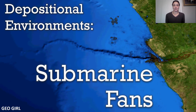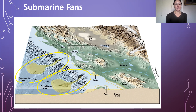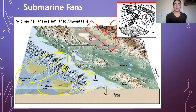Today we're going to be going over submarine fan depositional environments. In the picture showing depositional environments from source to sink, we have submarine fans down in the marine basin. These are similar to alluvial fans, which we went over in the first video of the depositional systems playlist. In this video we're going to focus more specifically on submarine fans and how they're different from alluvial fans.